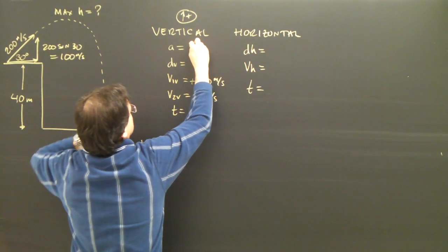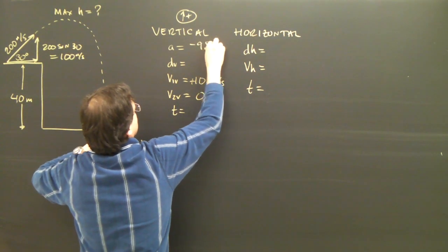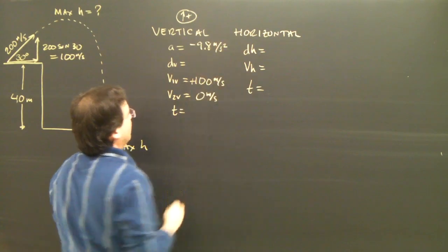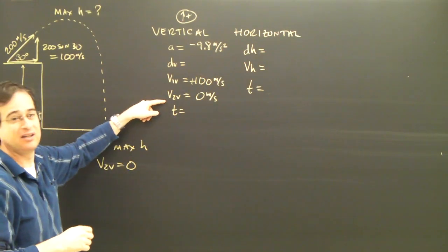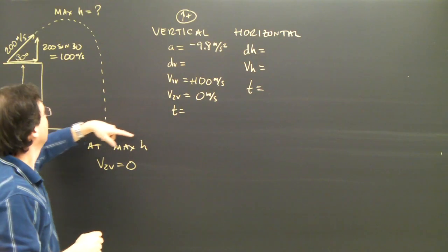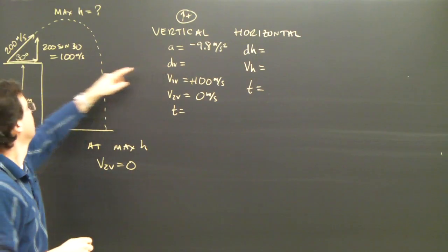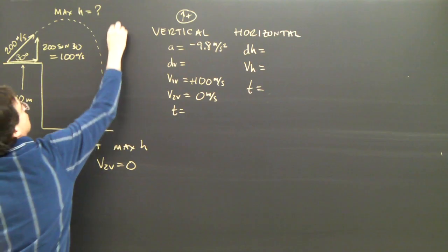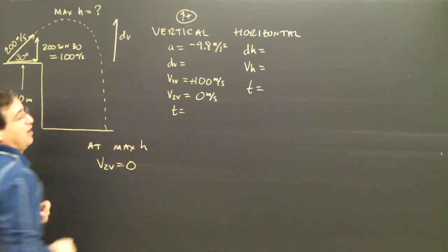We know that the acceleration here is negative 9.8 meters per second squared. I now have three of my variables. So now I can plug in and find d vertical, this height here, how high it went.